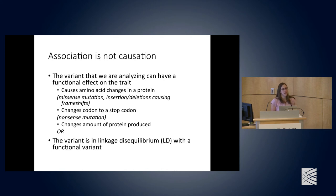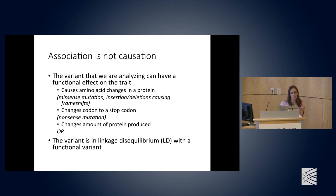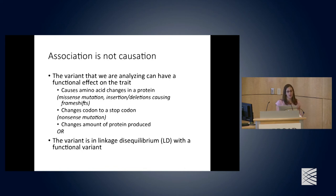One thing to remember is that association is not causation. Variants we analyze can have a functional effect — causing an amino acid change, altering a codon to a stop codon, or acting as a regulatory variant changing protein production. Alternatively, the variants may be in linkage disequilibrium with the true functional variants, requiring follow-up analyses to identify the actual causal variant.